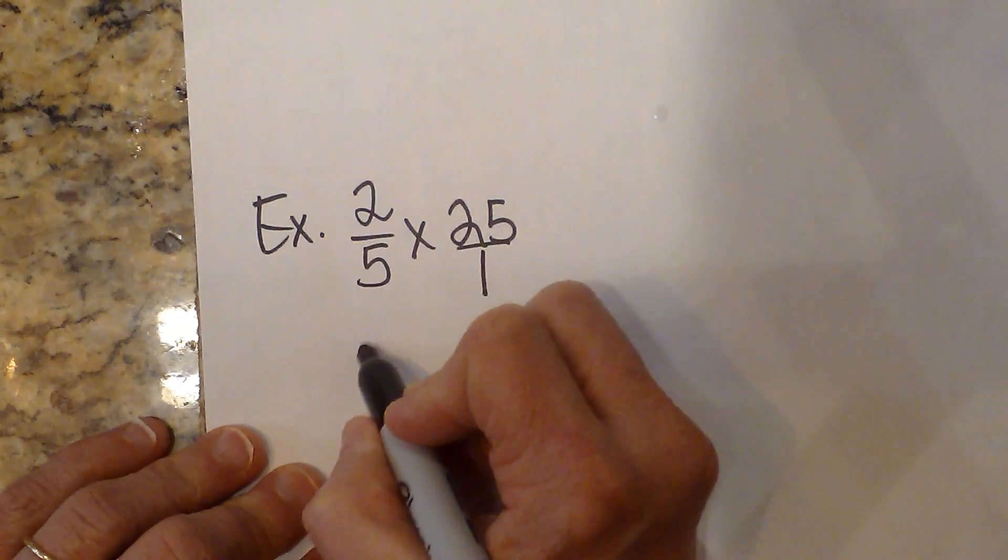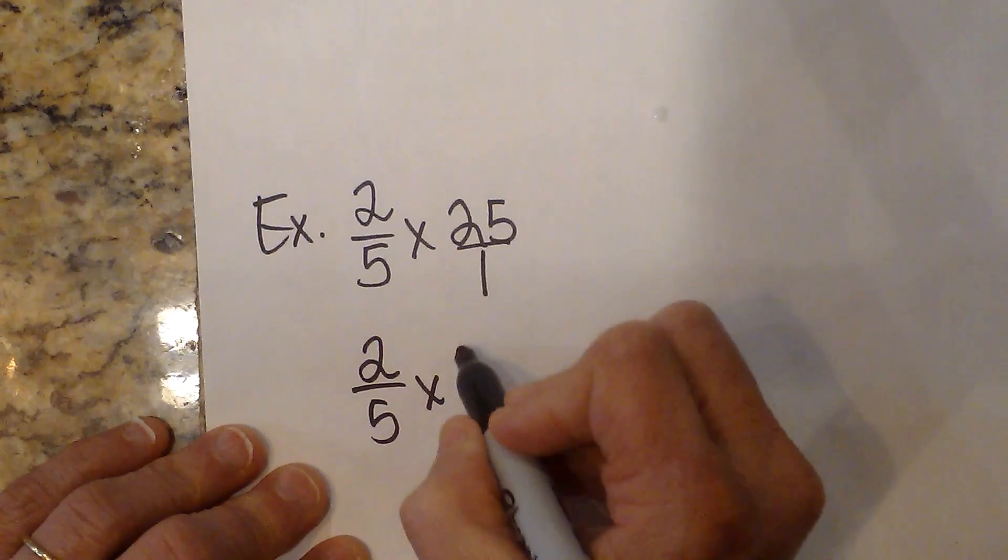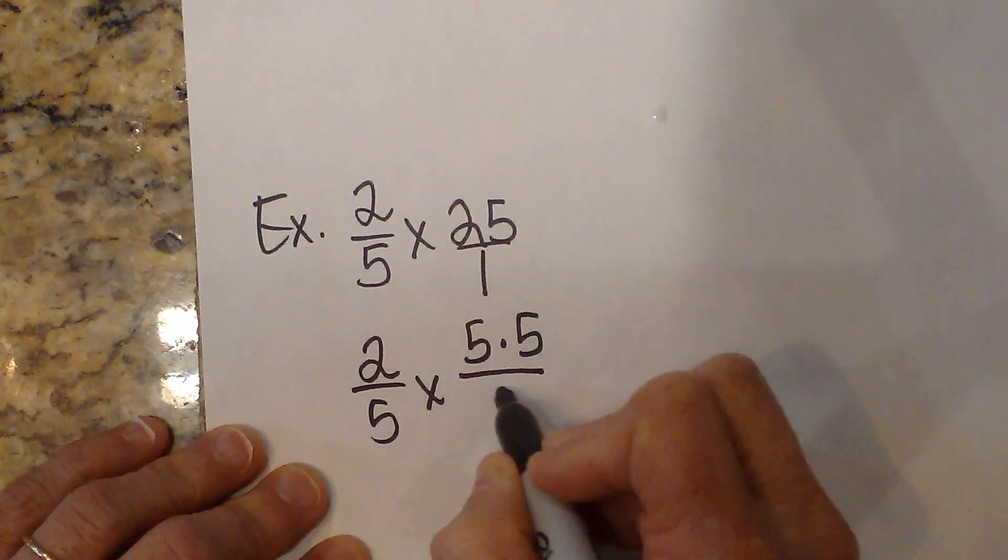Now 2 and 5—those don't factor, those are both prime. But we know 25 factors to 5 times 5. And then we've just got the 1.